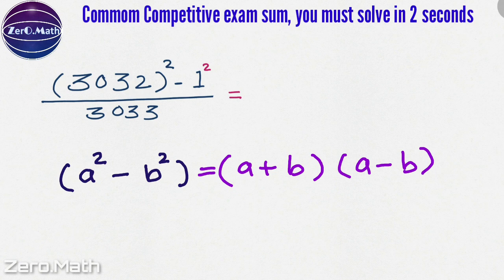Now, solving this problem is fairly simple. Let's assume 3032 is a and 1 as b. Let's apply the formula a squared minus b squared.